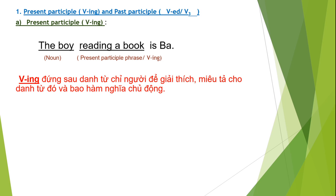Present participle phrase, còn gọi là verb -ing, đứng sau một danh từ chỉ người. Câu này có nghĩa là: 'The boy reading a book is Bar' — cậu con trai đang đọc sách là Ba. Cụm từ 'reading a book' bổ nghĩa cho 'the boy' — cậu con trai nào, cậu con trai đang đọc sách.